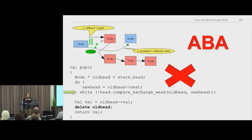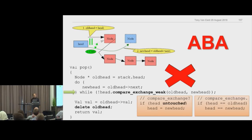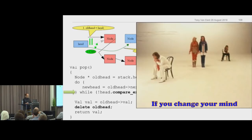Head was A, then became B, then came back to A — and you look at it and think nothing's happened. This is called the ABA problem. We like to think compare_exchange means 'if the variable hasn't been touched, go ahead,' but it really only says 'if the variable is the same value it used to be' — it may have changed and come back. That's why it's called the ABA problem: A, became B, then was A again.